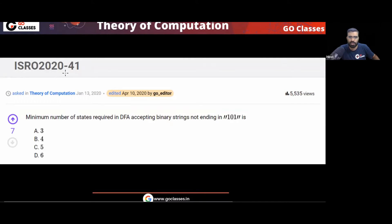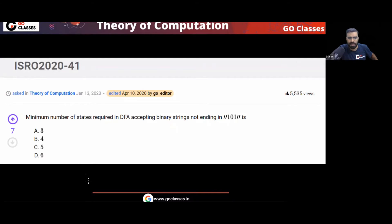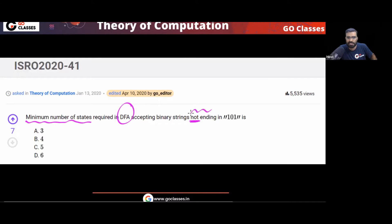This question came in ISRO 2020. The question asks for the minimum number of states required in a DFA accepting binary strings not ending in 101. This is a simple question. We need the minimum number of states in a DFA — that means we need to create a minimal DFA for the language of strings not ending with 101.